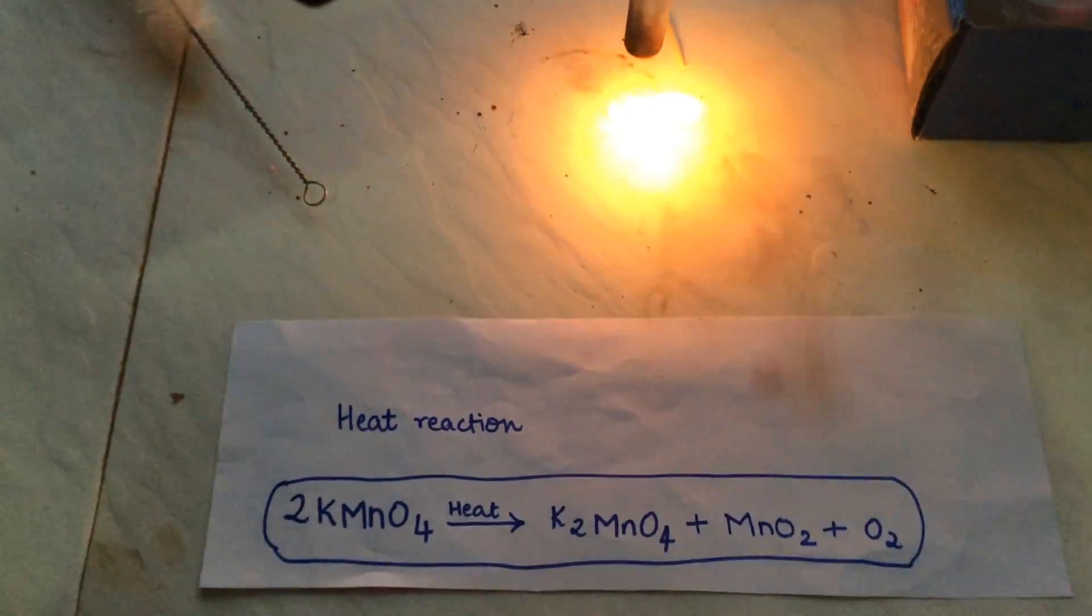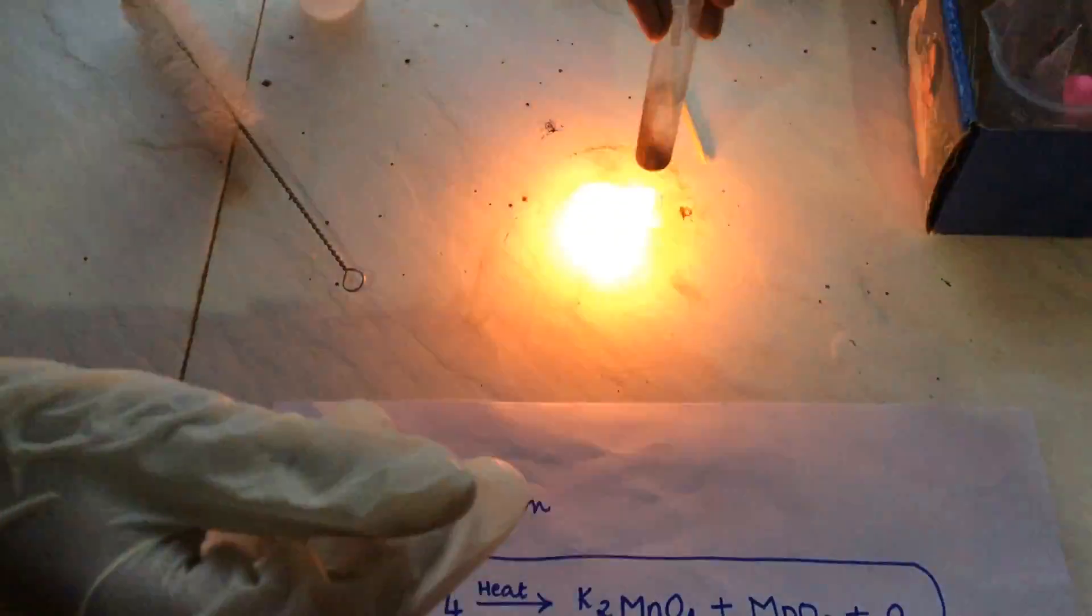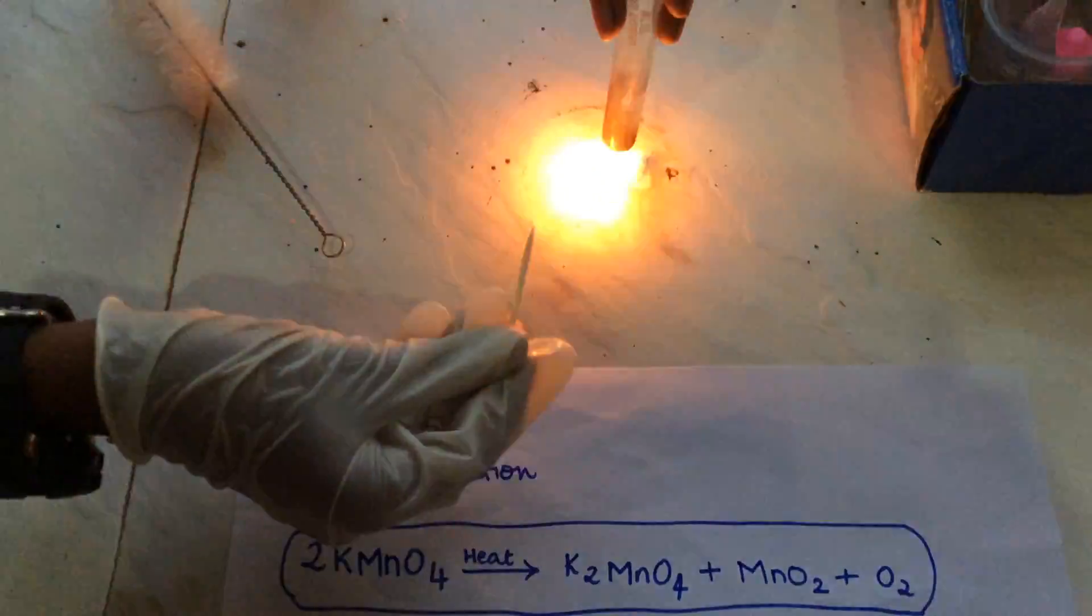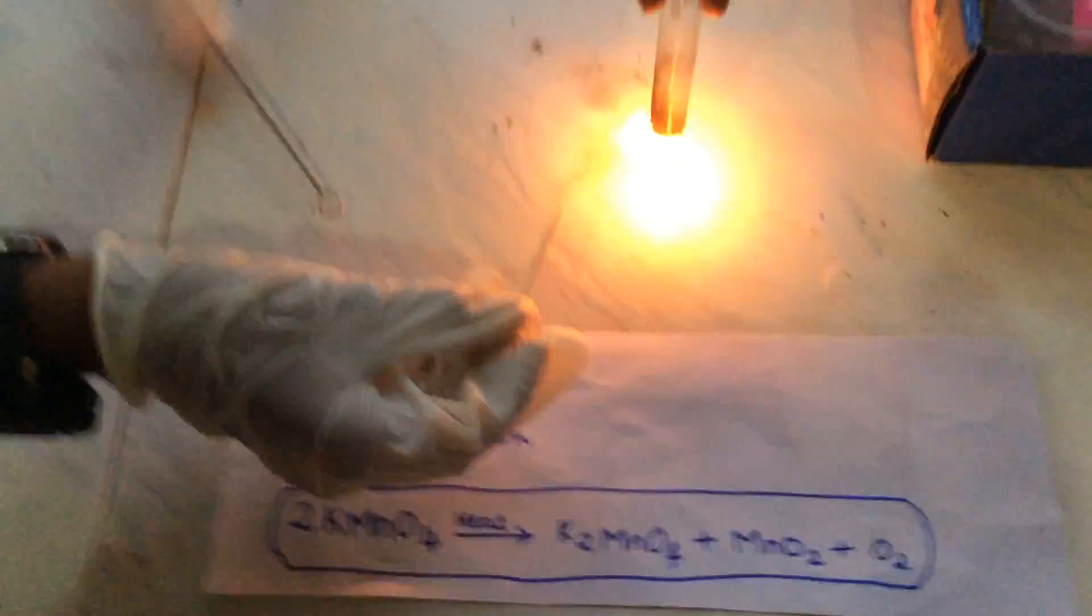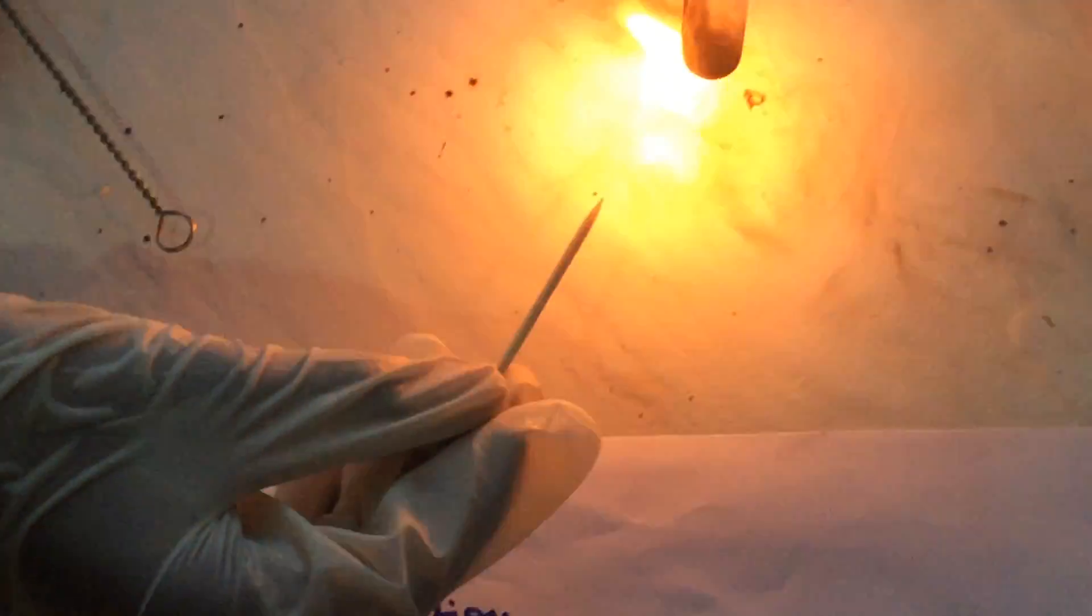Hold the test tube in a test tube holder and hold it over the flame. Very soon oxygen gas will be released. Light a toothpick and when its flame is small, bring the lit end to the mouth of the test tube. We are doing this with the help of a match stick here.